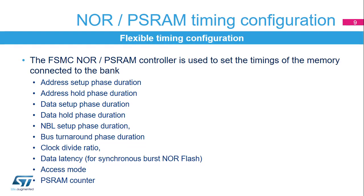The NOR PSRAM controller allows the configuration of various timing parameters for the supported memories: address setup phase — duration of the first access phase; address hold phase — duration of the middle phase of the access cycle; data setup phase — duration of the second access phase; data hold phase — duration of the data hold phase; NBL setup phase — duration of the byte lane setup phase; bus turnaround phase; clock divide ratio — number of AHB clock cycles or HCLK within one memory clock cycle, a ratio of 1 is supported; data latency — number of clock cycles issued to the memory before the first data transfer; and access mode. The cellular RAM does not allow maintaining the chip select signal low for longer than the TCEM timing specified for the memory device. This timing can be programmed in the PSRAM counter register.